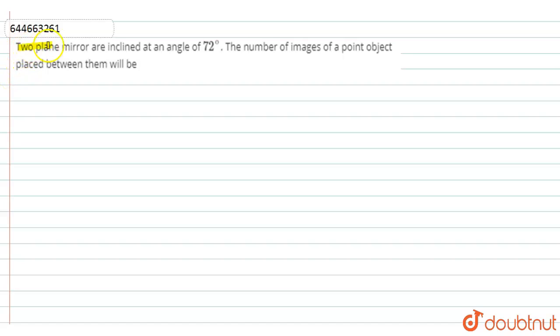given that two plane mirrors are inclined at an angle of 72 degrees. The number of images of a point object placed between them will be?